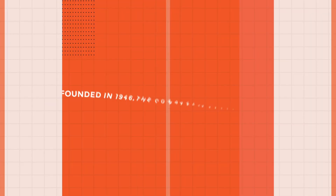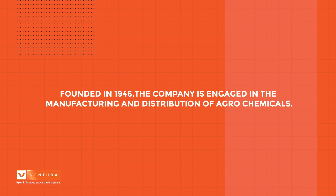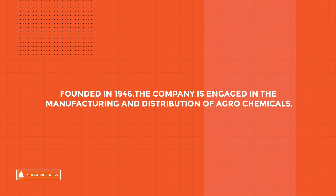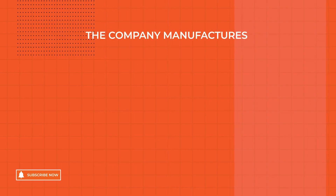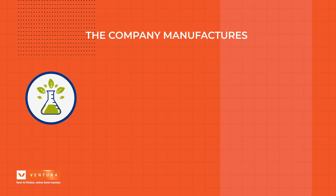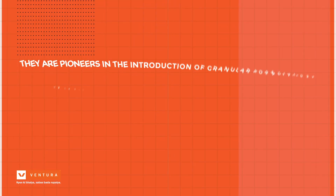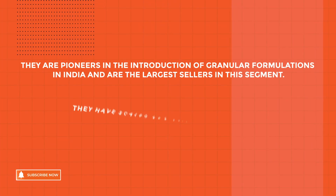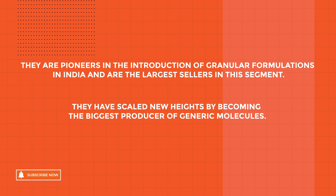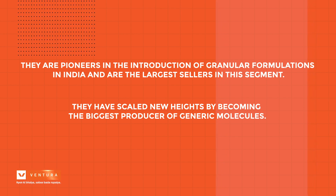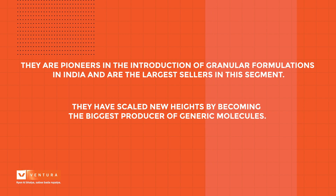P.I. Industries was founded in 1946. The company is engaged in manufacturing and distribution of agrochemicals, plant nutrients, plant protection specialty fertilizers, and hybrid seeds. They are pioneers in the introduction of granular formulations in India and are the largest sellers in the segment. They have also scaled new heights by becoming the biggest producer of generic molecules.